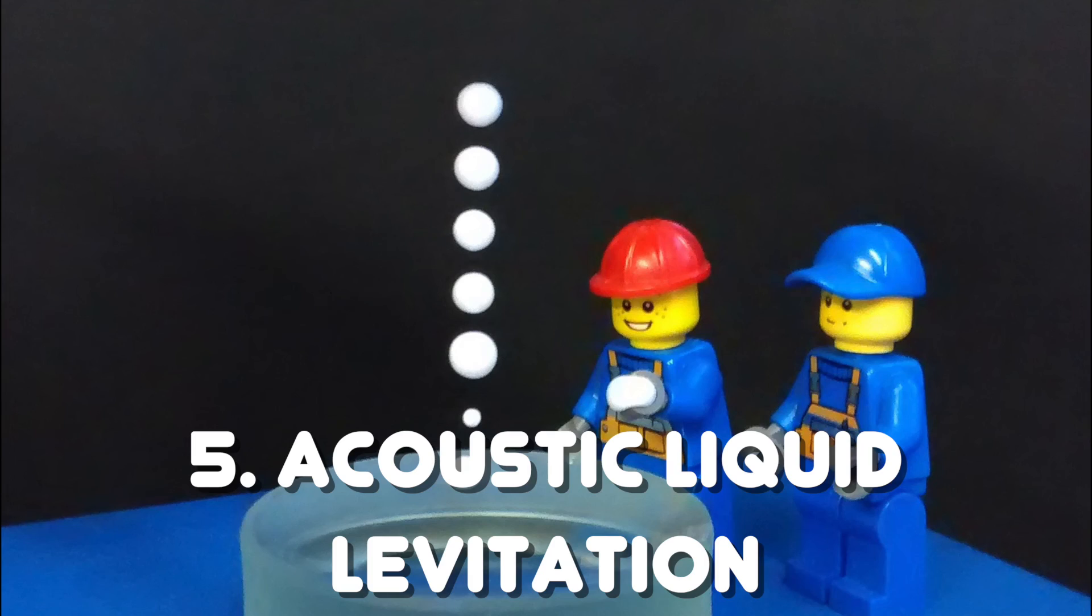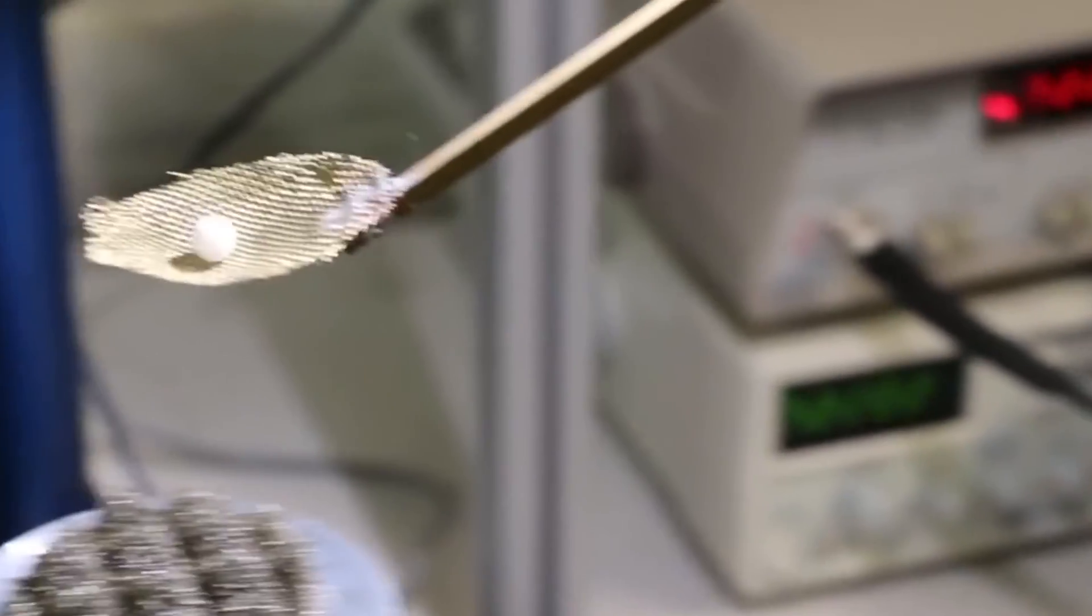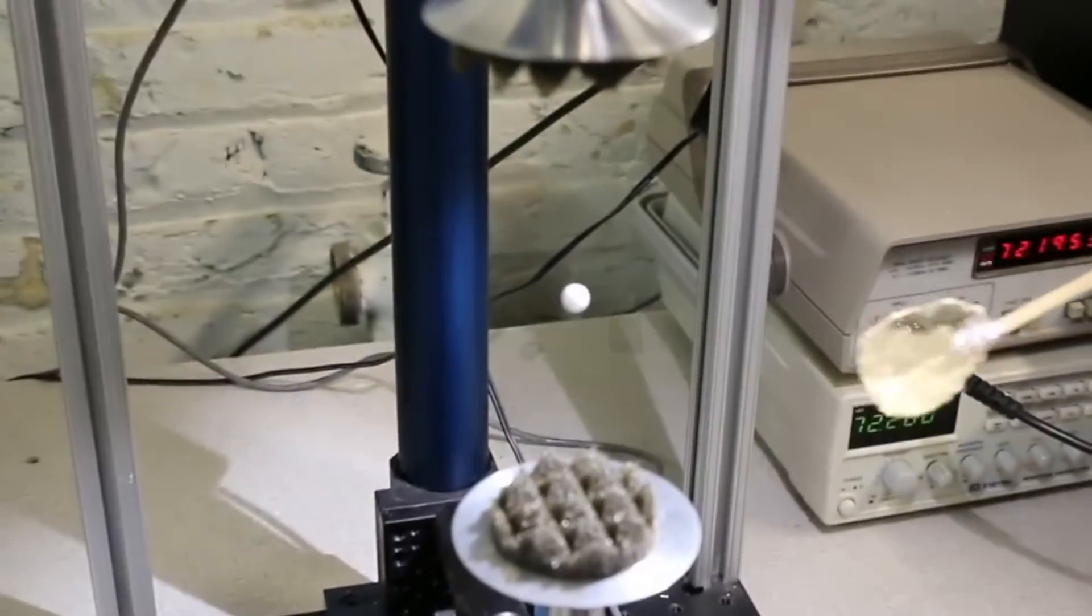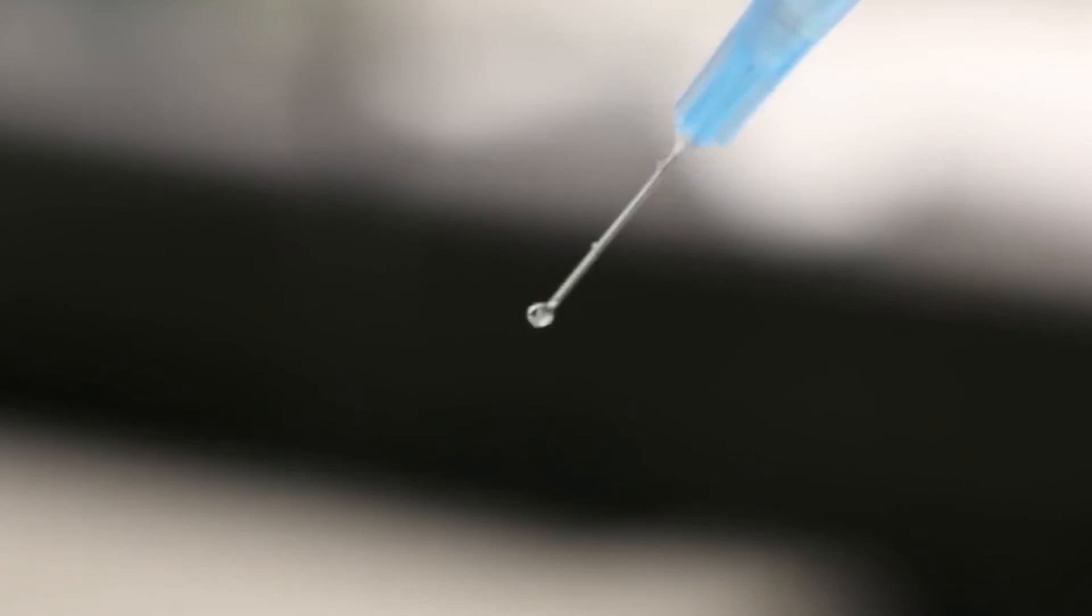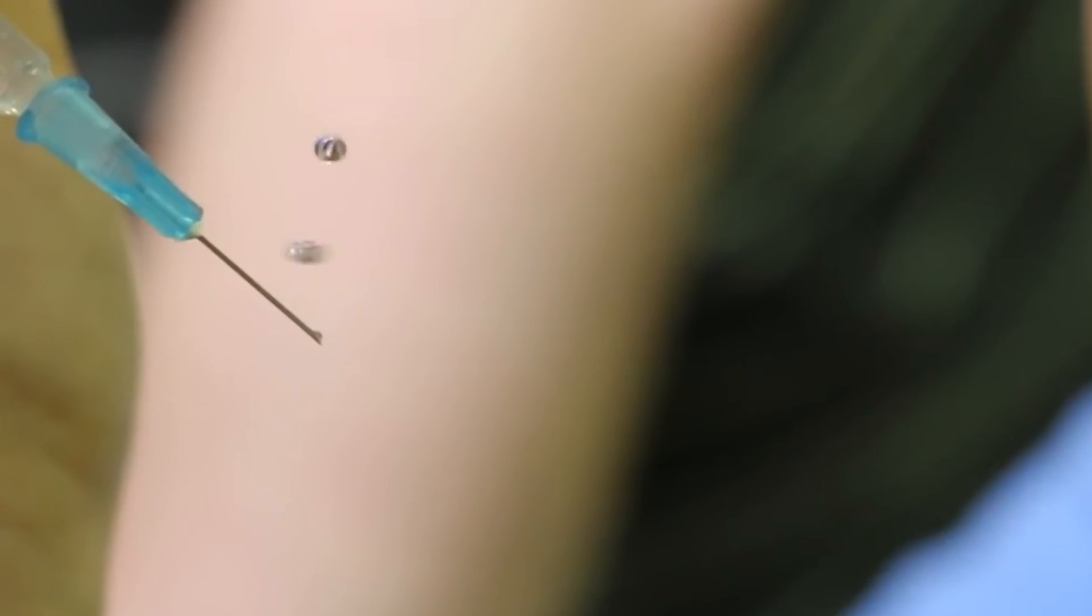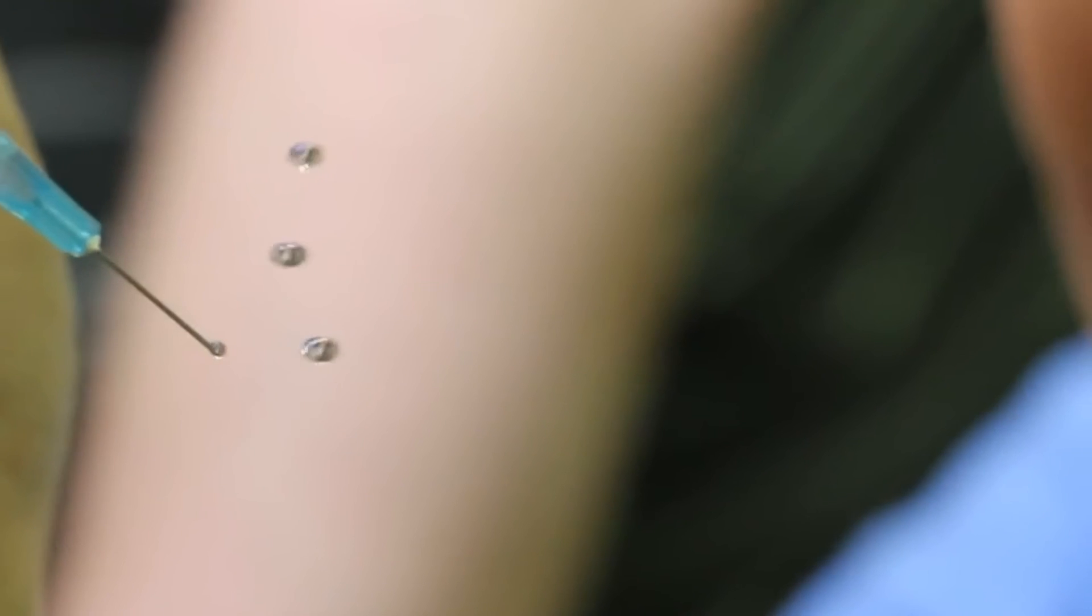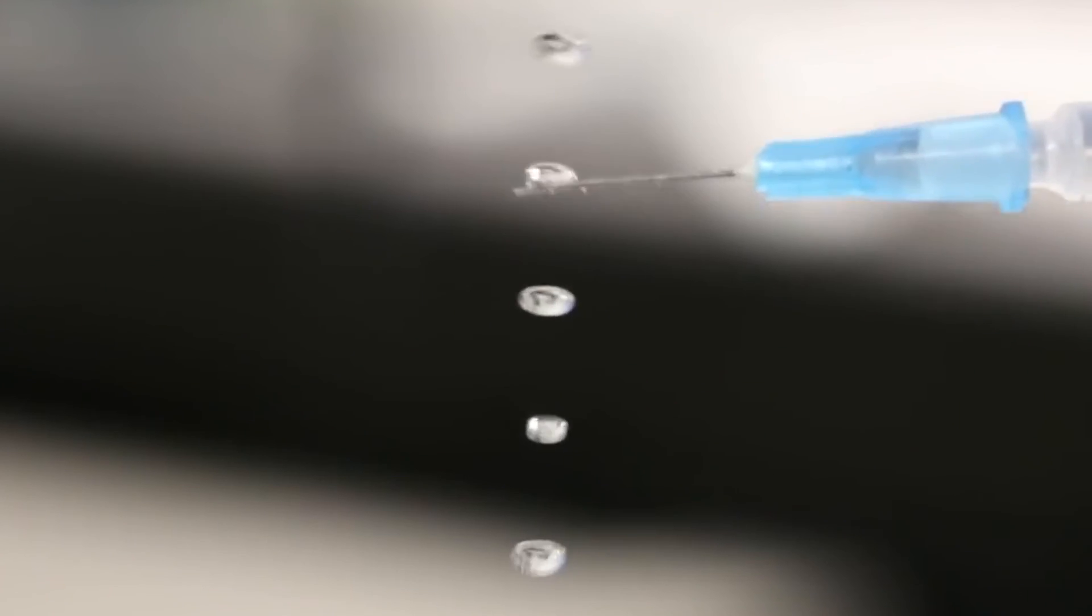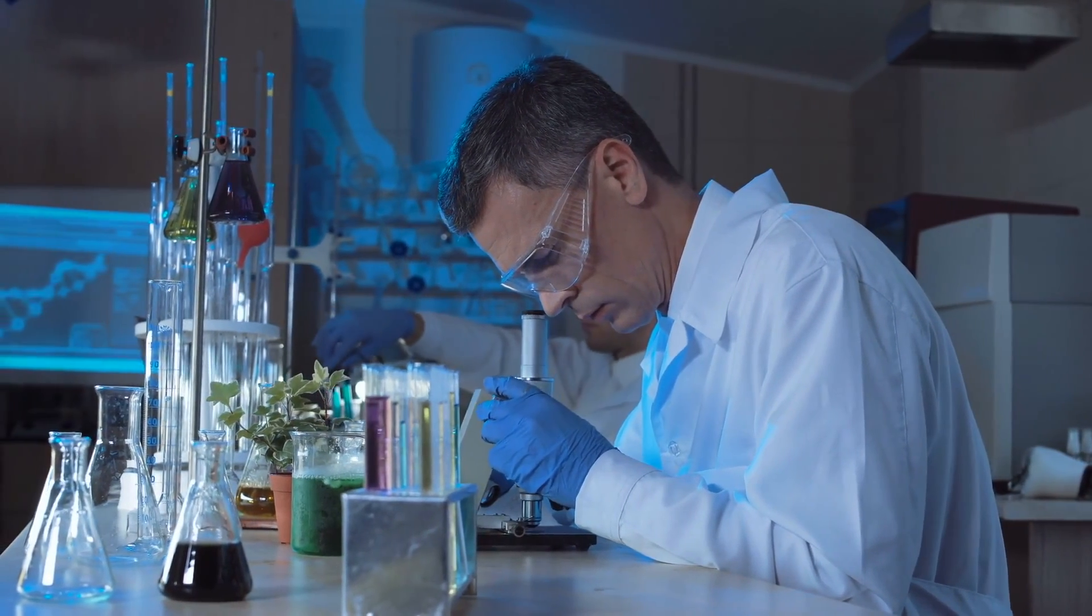Number five, acoustic liquid levitation. Sticking to the topic of levitation, one very strange thing that can happen with sound is levitation of both solids and liquids. Sound travels in a wave and each wave has a specific wavelength. What happens when you send two identical sound waves at each other, they create small spots or nodes where objects can be trapped inside if they are small enough to fit within the node. There are plenty of uses for this technology in scientific research.